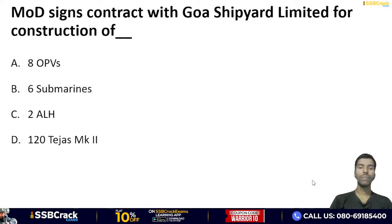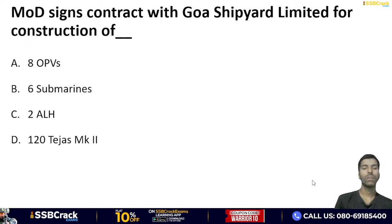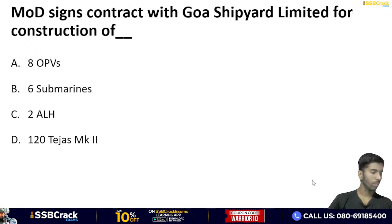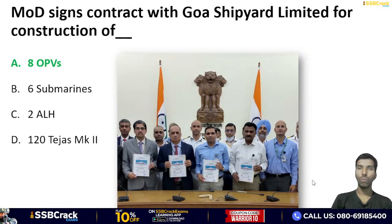Ministry of Defense signs contract with GSL for construction of — 8 OPVs, 6 submarines, 2 ALH, ya 123 smart vessels? Ministry of Defense ne total 473 crore rupiye worth ka GSL ke saath contract kiya hai. And the right answer is option A — 8 offshore patrol vessels (fast patrol vessels). Deal ki total worth: 473 crore rupiye.